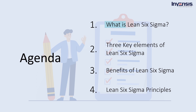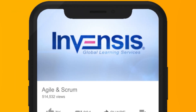To begin with, we will understand what Lean Six Sigma is and talk about its three key elements in detail. Moving forward, we will talk about why one must adopt Lean Six Sigma and what are all its benefits. We will conclude this session by addressing all of the Lean Six Sigma principles in detail. I hope the agenda is clear.